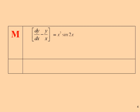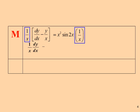We must multiply the equation with the integrating factor, which is 1 over x. We get a new equation, which is expressed using the product rule.